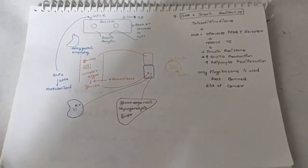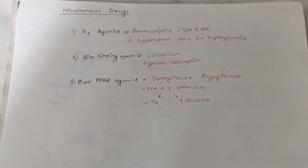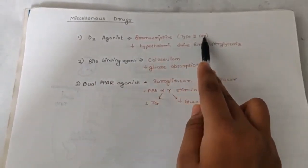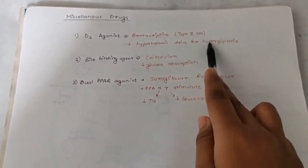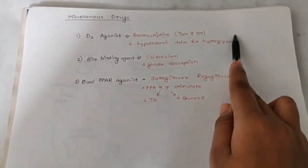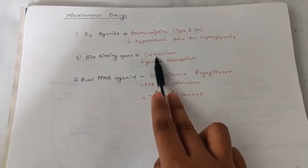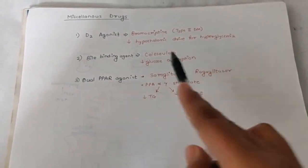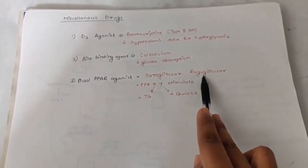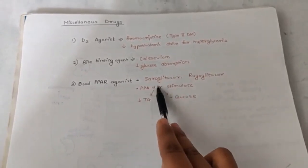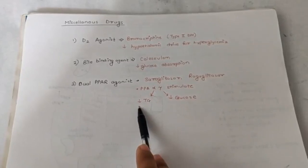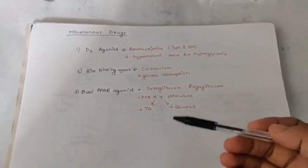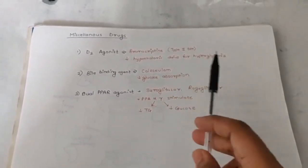Moving on to next category of drugs. The next category of drug is miscellaneous drugs which are tried for diabetes mellitus. First among them is dopamine agonist. Like bromocriptine is now used for type 2 diabetes mellitus. It reduces the hypothalamic drive for hyperglycemia. Second, we can also try bile binding agent that is colesevelam. It helps us by reducing the glucose absorption by binding to bile acids. Third, we can also use dual PPAR agonist. The drugs which have been approved are saroglitazar and ragaglitazar. It stimulates PPAR alpha and gamma. Alpha will lead to reduction in triglyceride, therefore also help in weight loss. And gamma receptor will reduce glucose level in the body because PPAR gamma will lead to reduction in insulin resistance by secreting transcription factor.